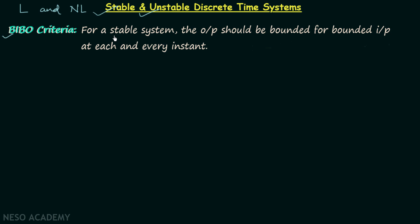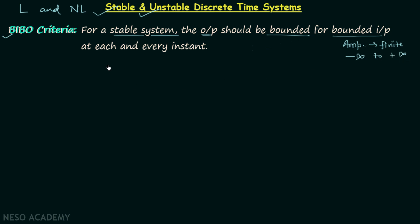According to this criteria, for a stable system the output should be bounded for bounded input at each and every instant of time. Bounded input means the amplitude of the input signal is finite from minus infinity to plus infinity, because we are checking at each and every instant of time. Similarly, bounded output means the amplitude of the output signal is finite from minus infinity to plus infinity.